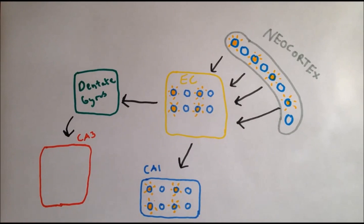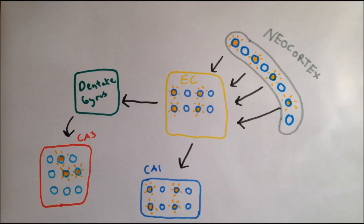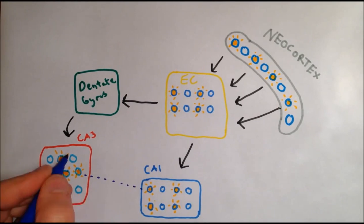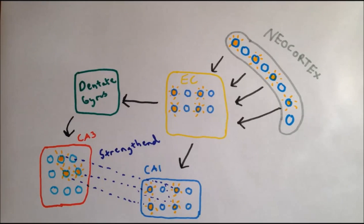This means that when the neurons are activated in CA3, also activated in CA1 is another representation of the cortical pattern. As these two populations of neurons are activated at the same time, they undergo long-term potentiation, and the connections between them are strengthened.